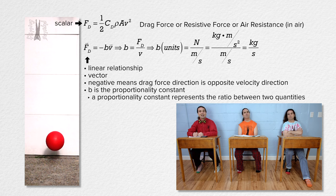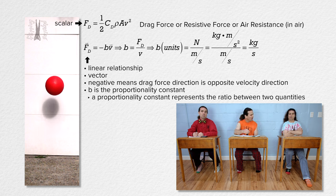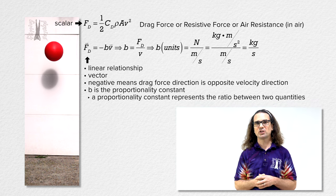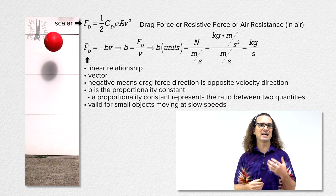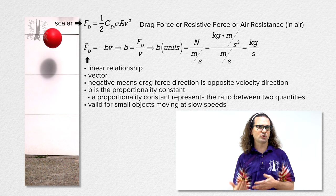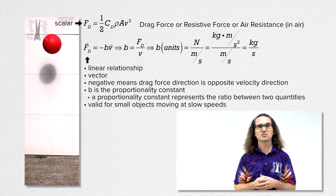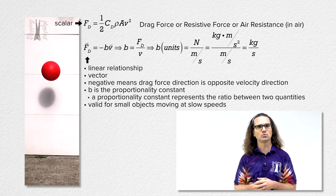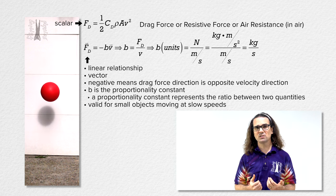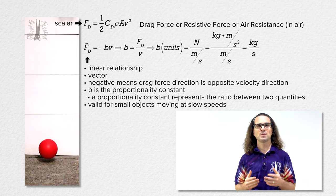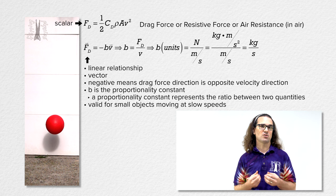Why do we have a different, simpler equation for the force of drag, and how do we know when to use which equation? This new proportionality constant drag force equation is valid for small objects moving at slow speeds. In order to truly determine which equation to use, you would need to do experiments. As far as the AP exam is concerned, the College Board has given the specific equation they want you to use for drag force, so do not memorize either of these equations.